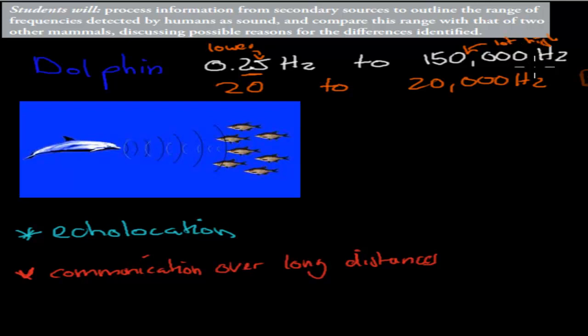You should actually know those numbers. You don't have to remember too many numbers in this biology course, but these are the ones you do have to remember. For the dolphin, the range is 0.25 to 150,000 Hz.